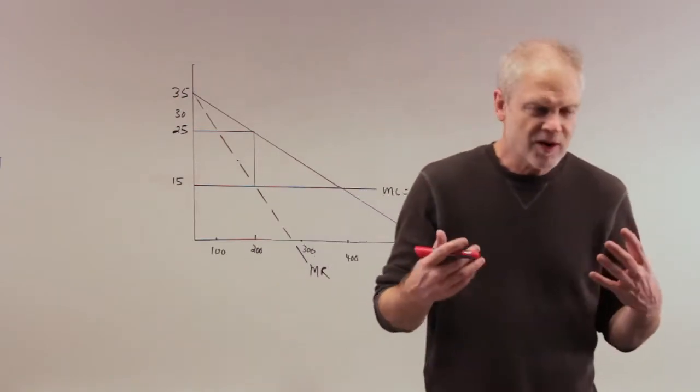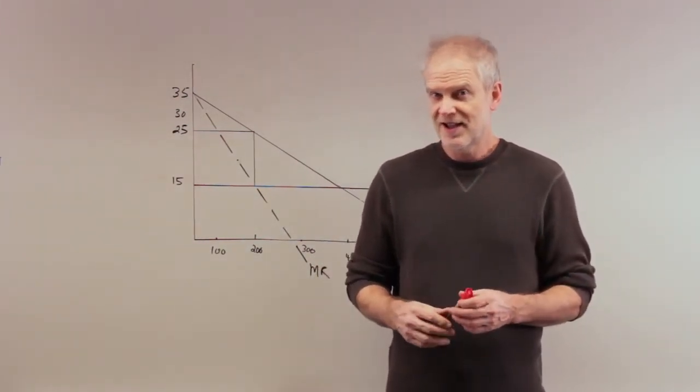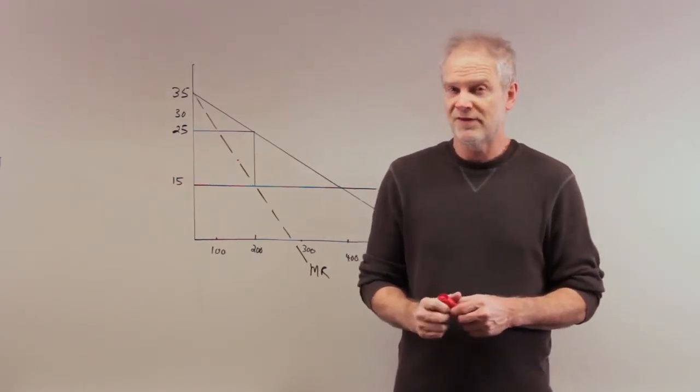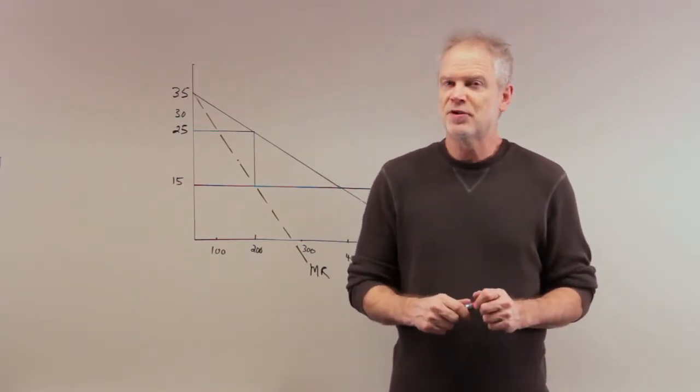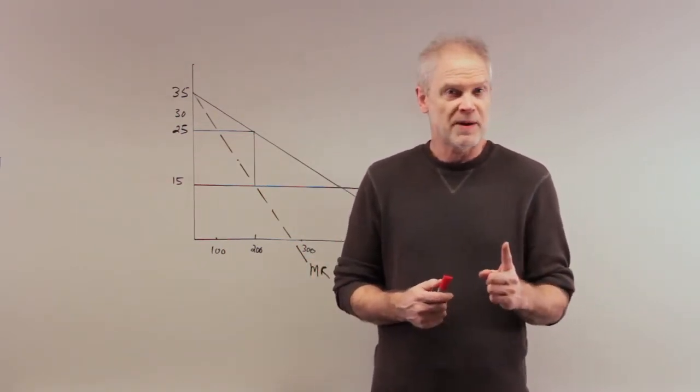Now, deadweight loss is one of the problems monopolists creates for us. Because they charge a price and produce at an output level that is lower than it would be produced and charged. A lower output and higher price than would be charged in a perfectly competitive market.